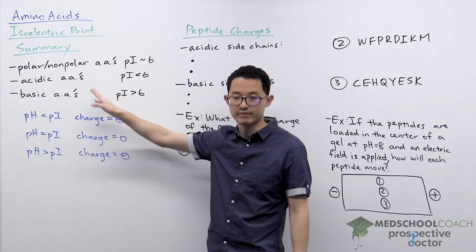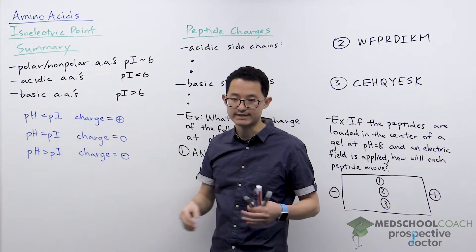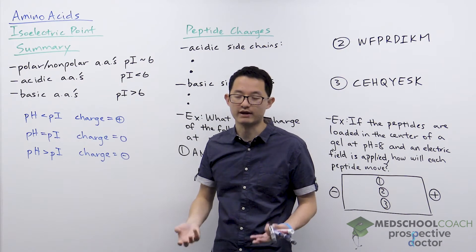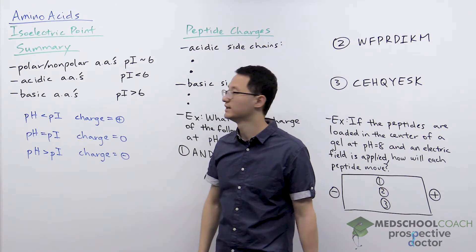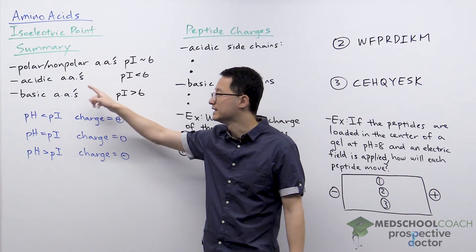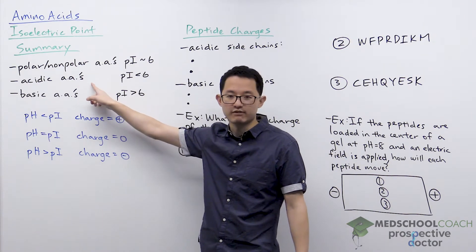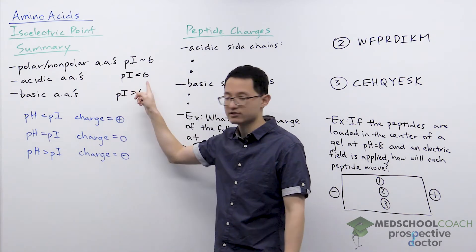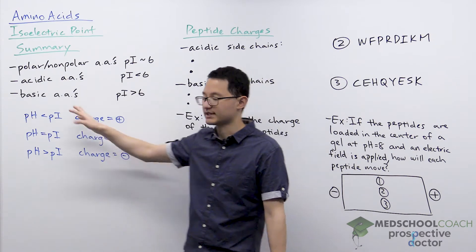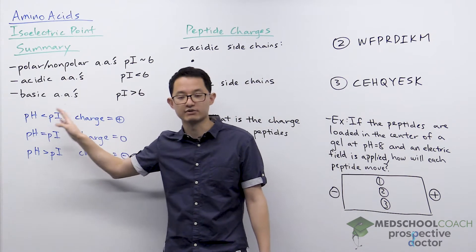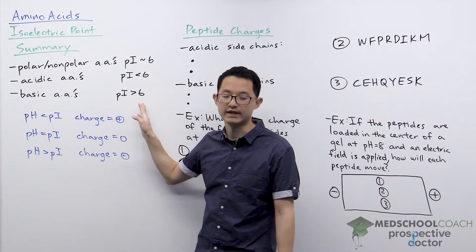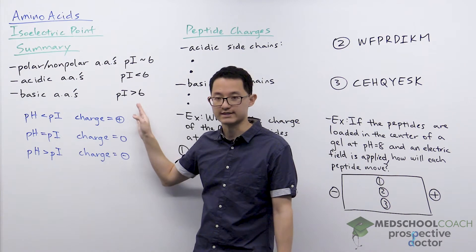For acidic amino acids and basic amino acids, they have a third acidic group to worry about — the side chain. So as we saw with aspartic acid, acidic amino acids have an isoelectric point less than six. And basic amino acids, as we saw for lysine, they have an isoelectric point greater than six.